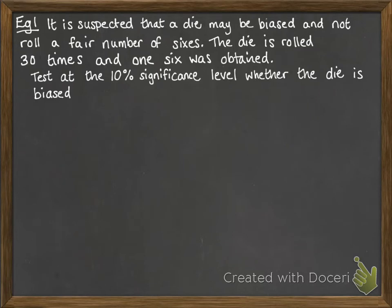This example is looking at a die that is suspected that it's biased and not rolling a fair number of sixes. The die's rolled 30 times and only one six was obtained. We're going to test at the 10% significance level whether the die is biased.